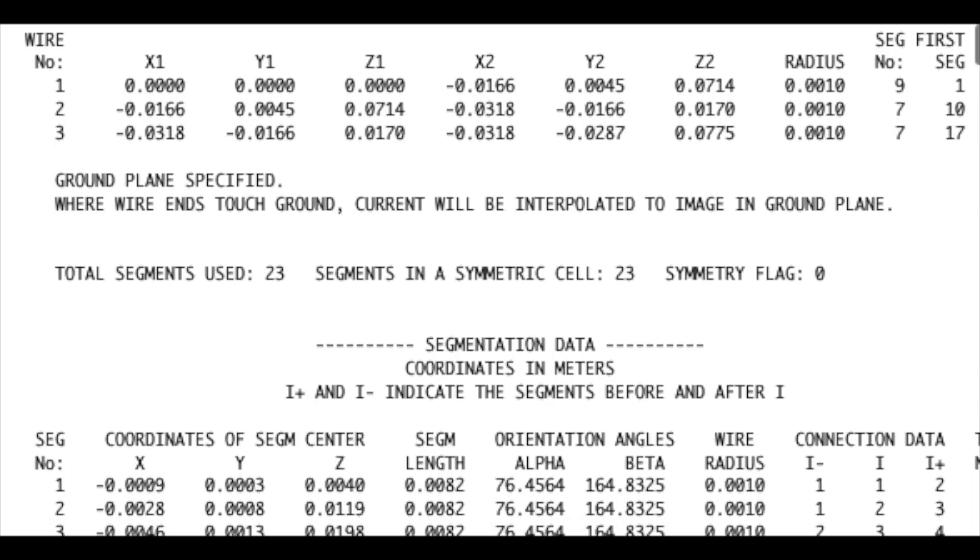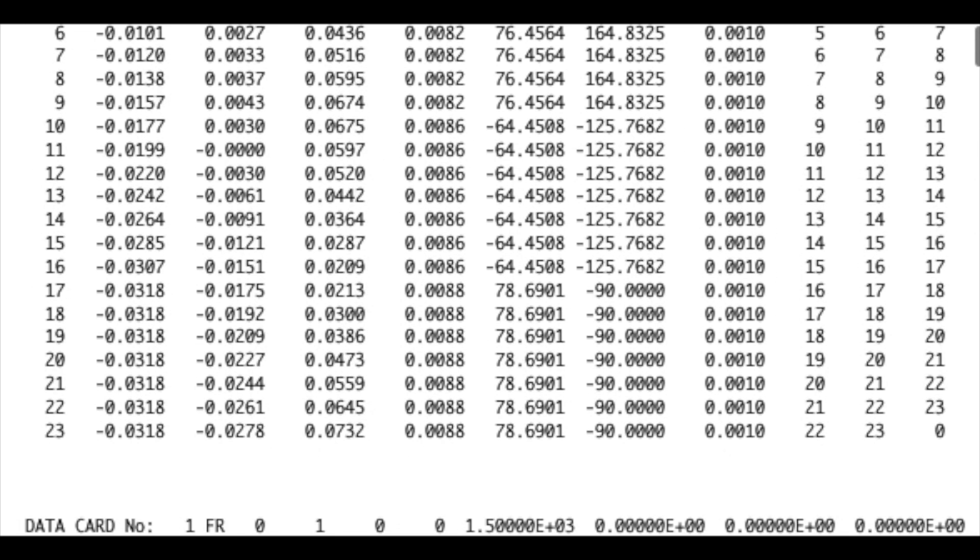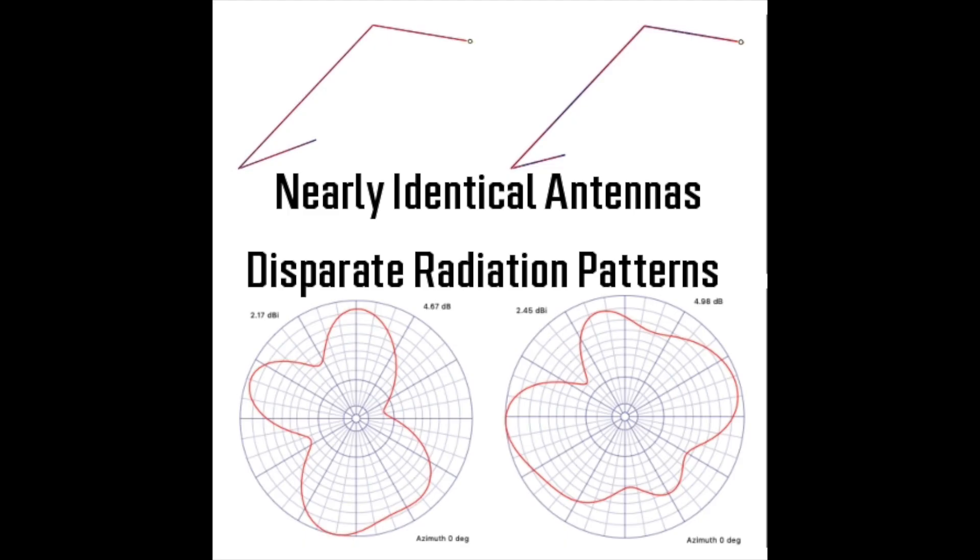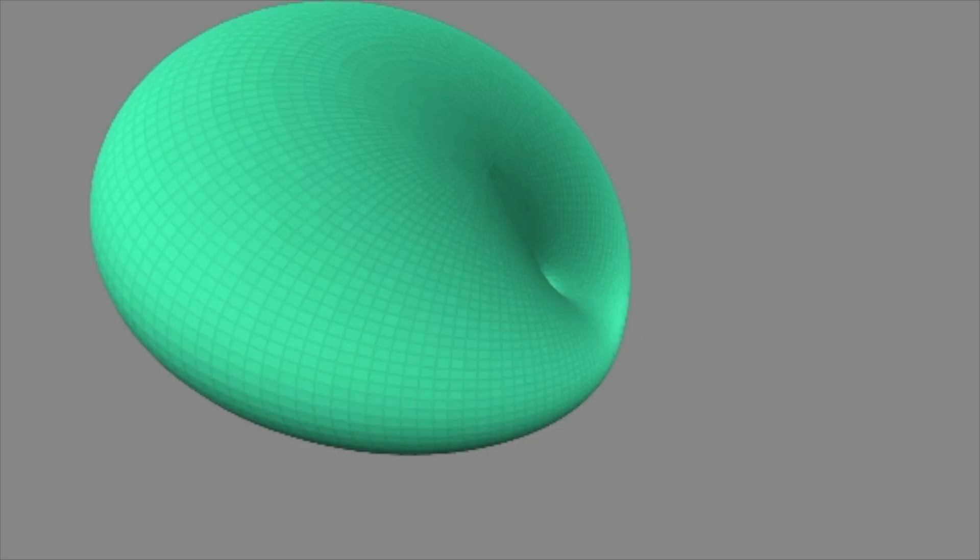The thing with antenna design is that it is inherently difficult, and in many ways not completely understood. So making one tiny change can completely alter the behavior of your antenna. So you can't usually calculate the ideal antenna design for a given frequency.